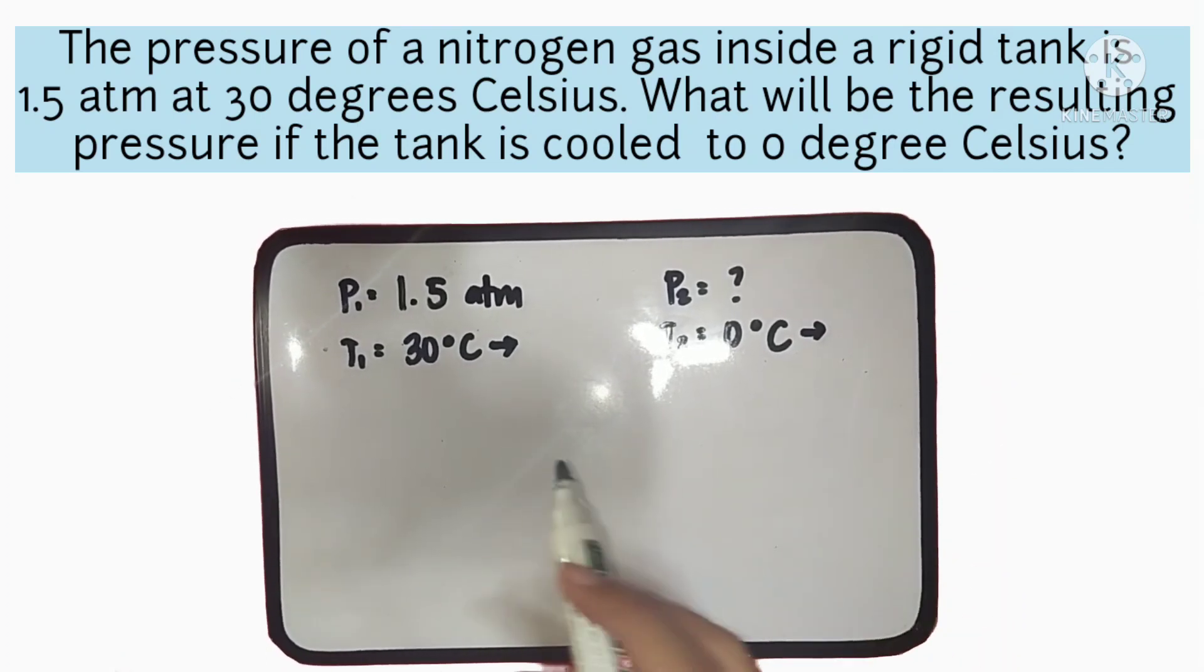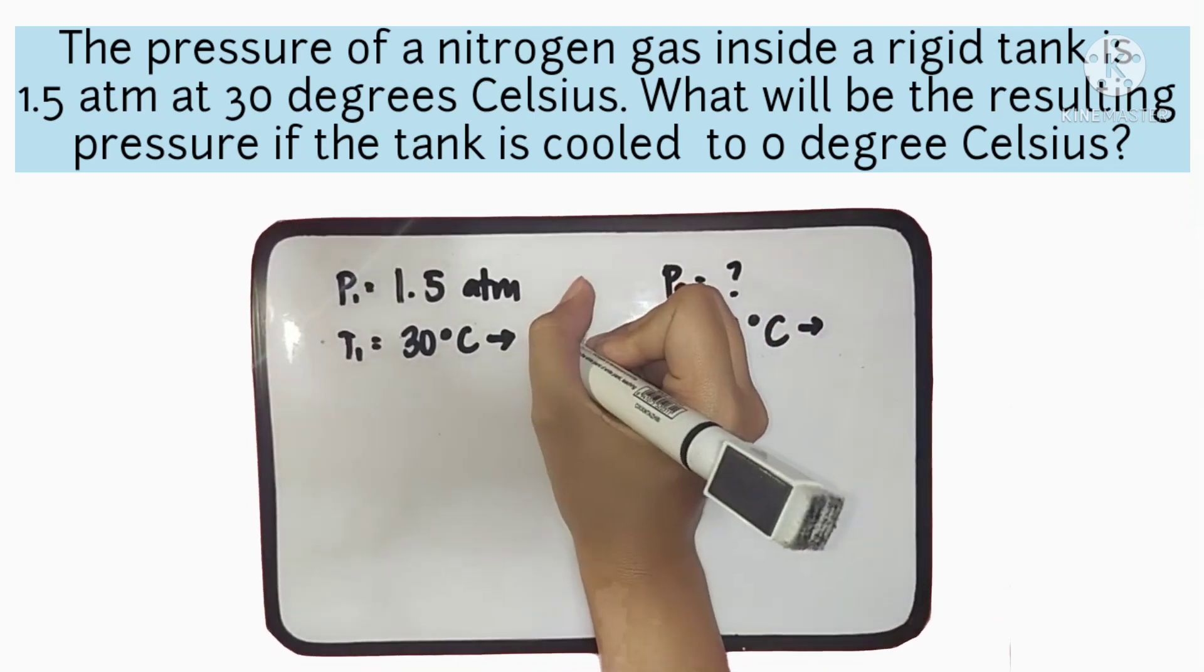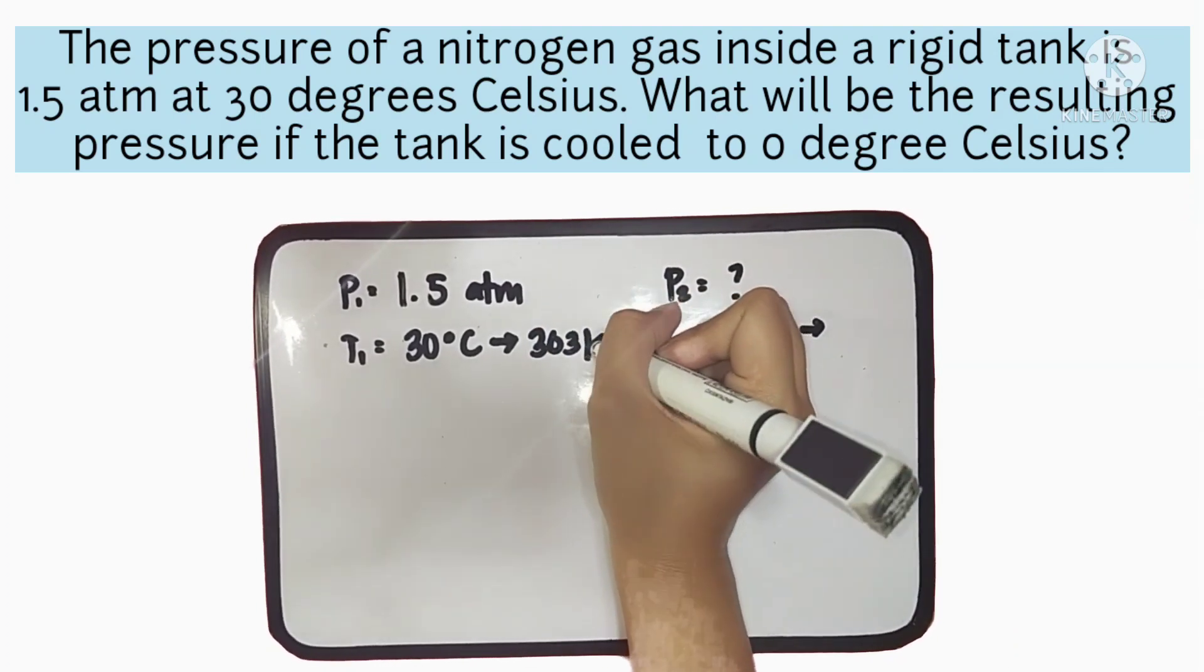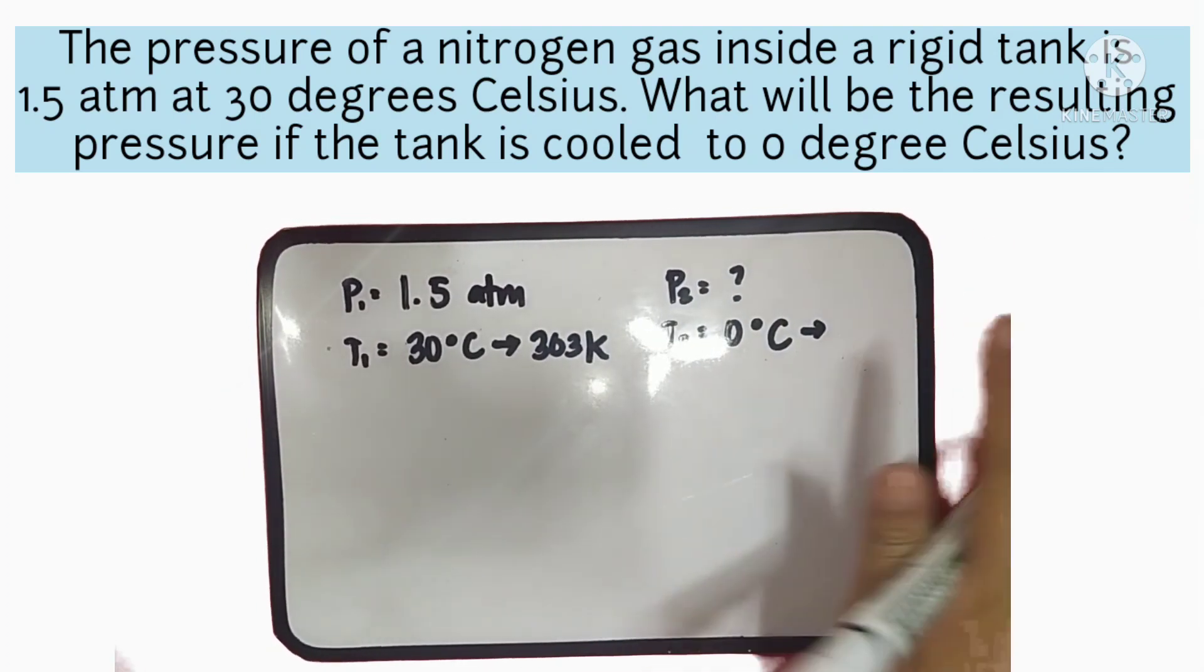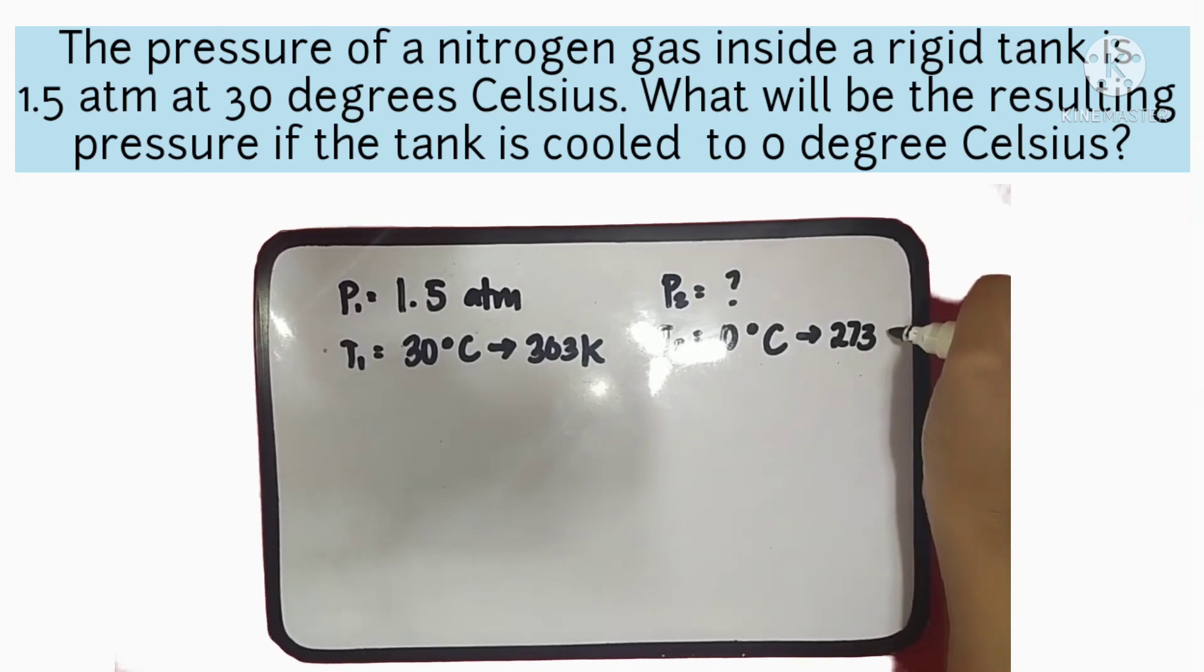To convert this to Kelvin, we will simply add 273. So, the initial temperature will be 303 Kelvin, while the final temperature is 273 Kelvin.